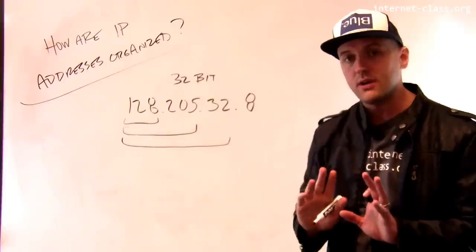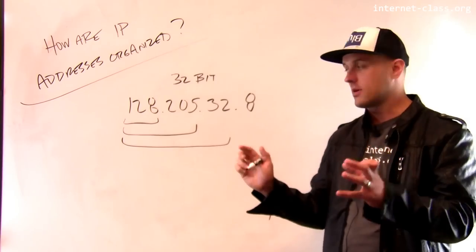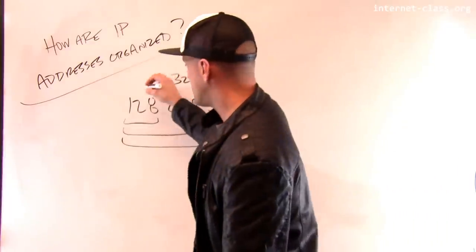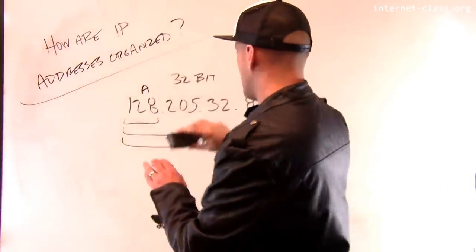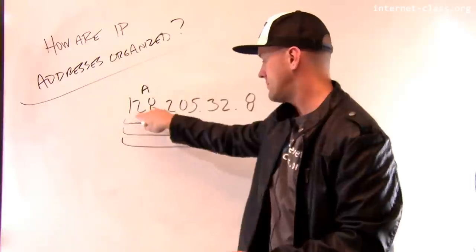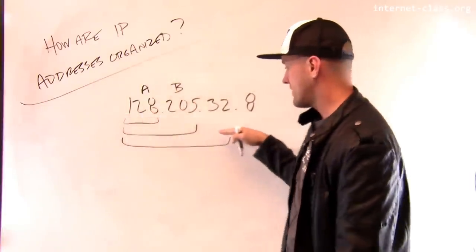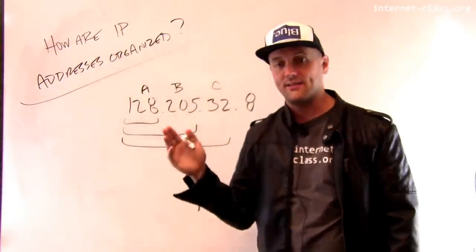So the original internet structure set up three classes of networks. Networks that start with a single dotted prefix were referred to as class A networks. Networks that started with this longer two dotted prefix were known as class B. And networks that started with three dots, three dotted prefixes were known as class C.